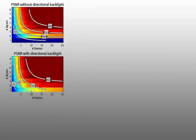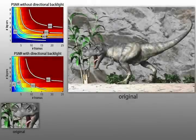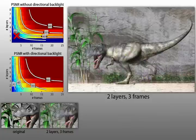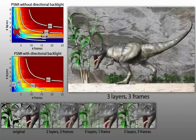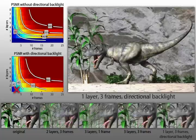In the paper, we analyze the trade space of tensor displays, including the number of layers and the number of temporally multiplexed frames, for configurations with and without directional backlighting. We demonstrate that, compared to prior time-multiplexed dual-layer and static multilayer designs, tensor displays significantly increase the image quality.